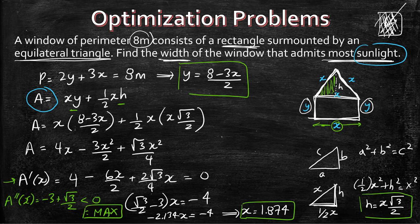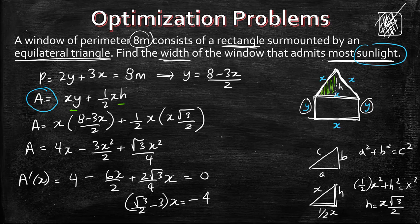That's it — pretty straightforward. If you have any questions, please let us know in the comments. From there you can just solve by entering root 3 over 2 minus 3 into your calculator.